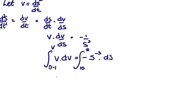So if we integrate v we're going to get v squared over 2 between v and 0.1. This is going to be equal to... let's leave the minus alone. So we integrate s to the minus three, goes to s to the minus two divided by the new power.